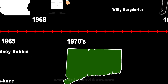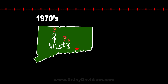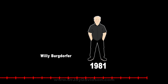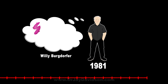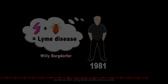Here's where the name Lyme came in. A bunch of kids and grown-ups in Lyme, Connecticut in the early 70s suffered with mysterious and debilitating issues. In 1981, Willie Borgdorfer discovered that a bacterium called a spirochete carried by ticks was causing Lyme disease — this is where Borgdorferi comes from.